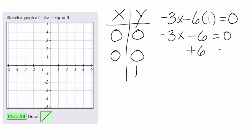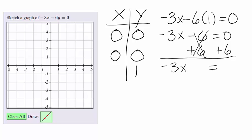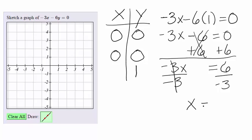Negative 6 times 1 is negative 6, equals 0. Now we will add 6 to both sides of the equation, and we get negative 3x. Negative 6 plus 6 will zero out, equals 0 plus 6 is 6. Dividing both sides by negative 3, negative 3 divided by negative 3 cancels, and x equals 6 divided by negative 3 is negative 2.